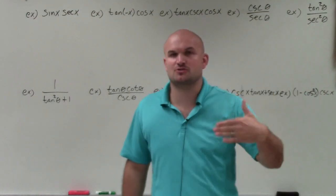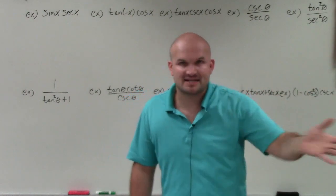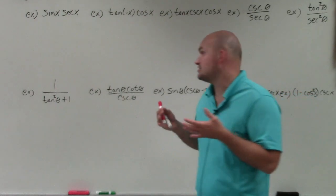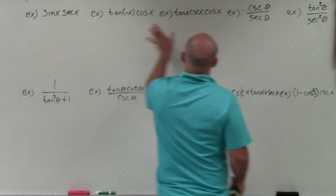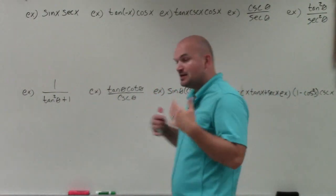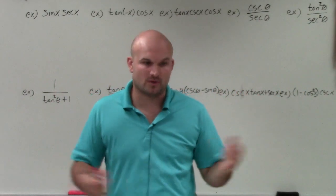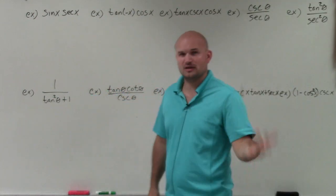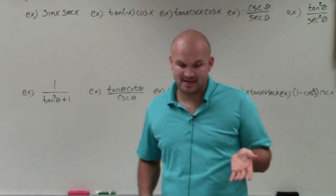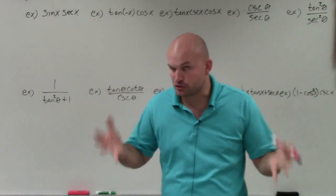The simplifying process is just a way for us to start preparing for what's going to come ahead, as far as verifying and solving and so forth. We're going to take expressions that have multiple trigonometric functions within them and simplify them down to one or down to one number. There are a couple different ways to do this, but one of the best ways is knowing your trigonometric identities, which is extremely important.